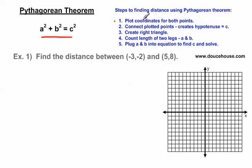Step 1 says to plot the coordinates for both points. I have (-3, -2), so let's plot that. And then we have (5, 8), so I go over 5 and up 8. My goal is to find the distance between these two points. Now we need to connect the plotted points, and we're going to call that side C. Let's connect these two points — I'm going to call this C, and this C corresponds to the C in the equation.